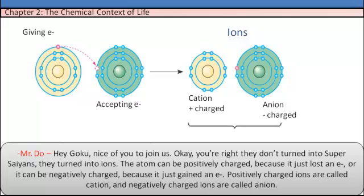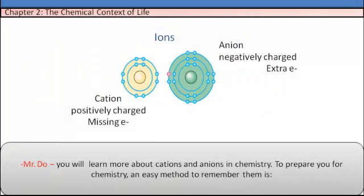Positively charged ions are called cations, and negatively charged ions are called anions. You will learn more about cations and anions in chemistry. Here's an easy method to remember them.